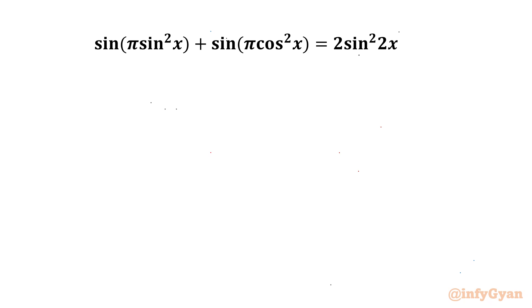Hello my dear friends, welcome back to InfiGyand. In today's video we are going to solve one trigonometric equation. Our equation is sin of π sin²x plus sin of π cos²x equal to 2 sin²(2x). We have to find general solutions. So let's get started by considering our substitution.